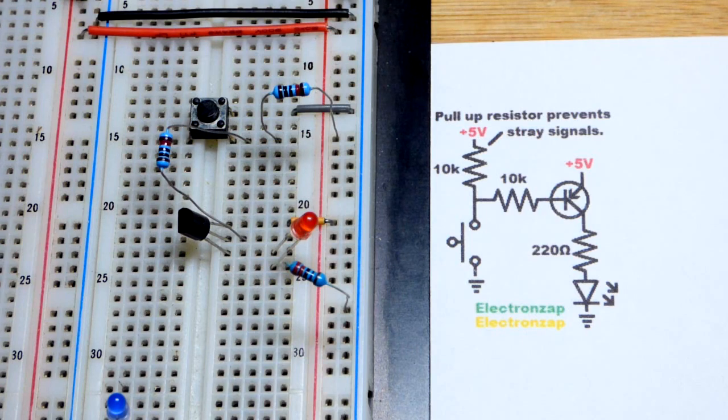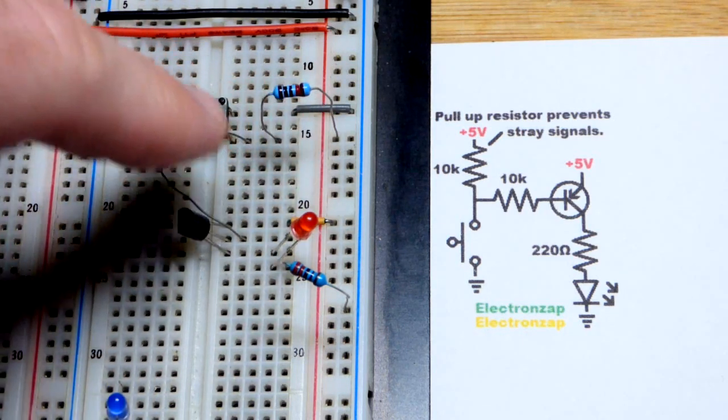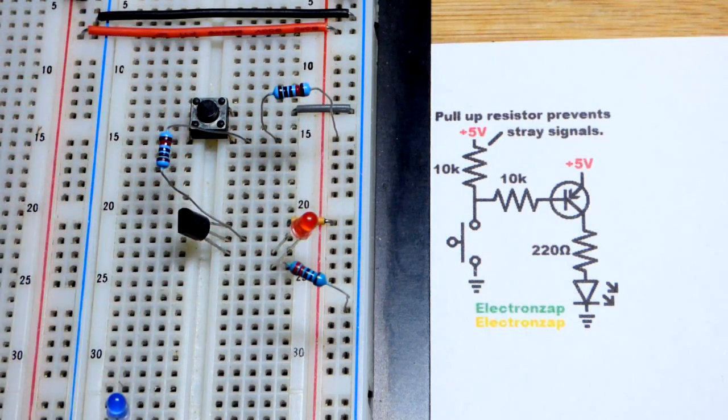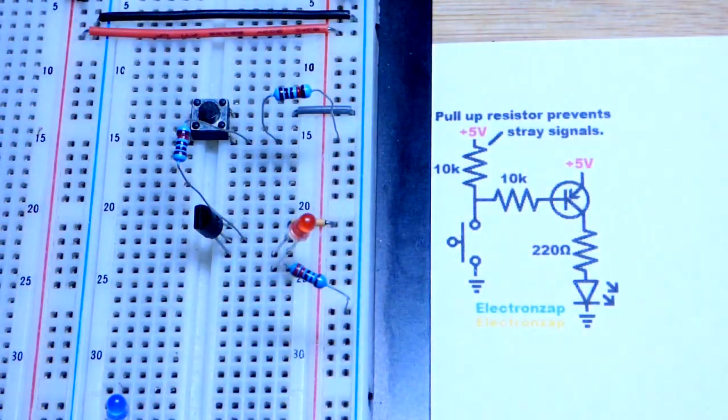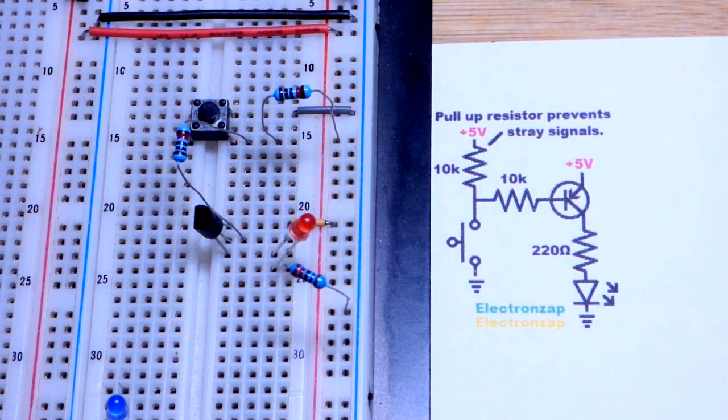Now we have the pull-up resistor. It's holding the 5 volts to the base because it doesn't conduct. You can see here that it's off completely, even as I touch that base resistor. That is why you use pull-up resistors at inputs.